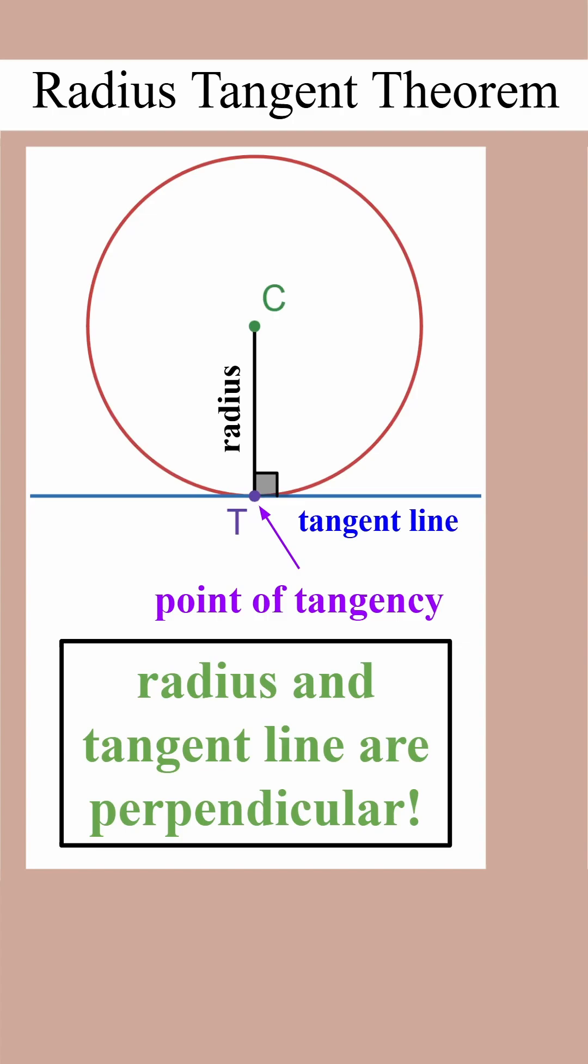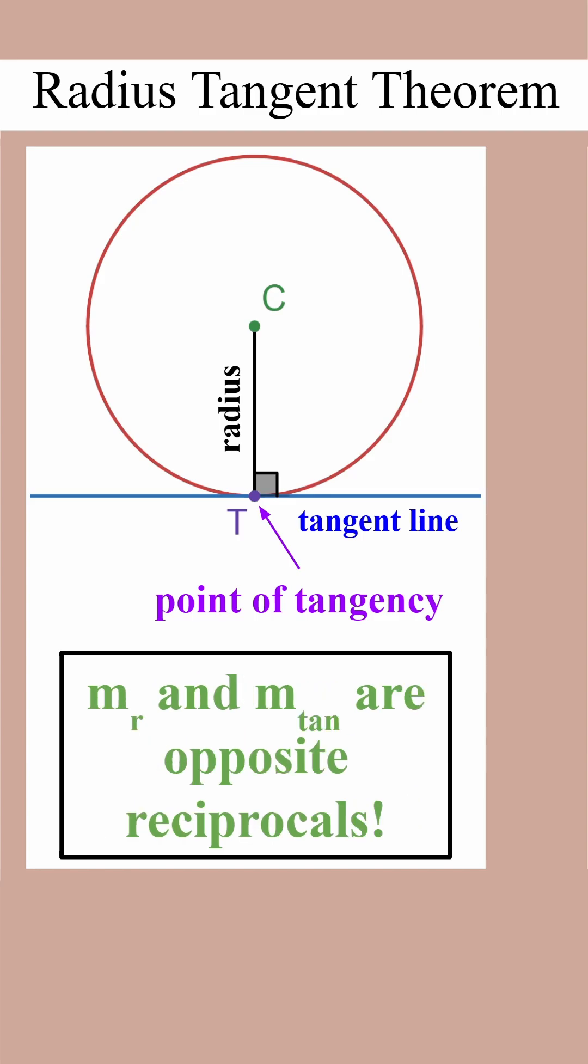The Radius Tangent Theorem tells us that for a given point of tangency, the radius and tangent line are perpendicular. This means that the slope of the radius and the slope of the tangent line are opposite reciprocals. This is true of all perpendicular lines, and we covered that in a previous short.